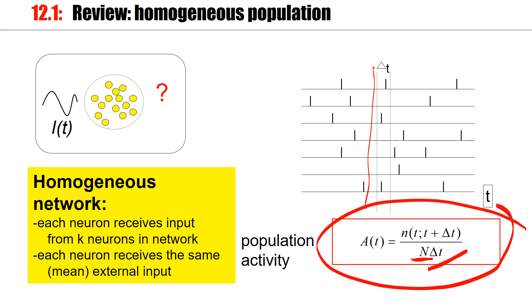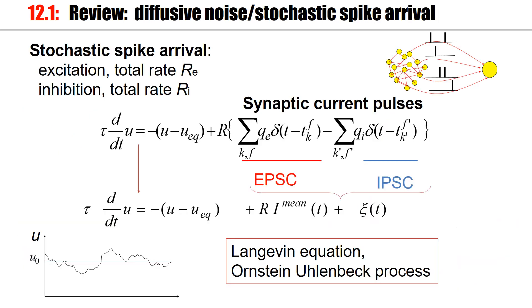And for the following lecture, I will always assume that we have a homogeneous network in the sense that each neuron receives input from k neurons in the network. And each neuron receives the same external input.